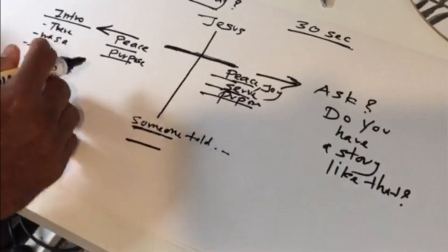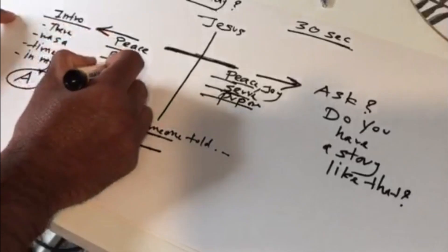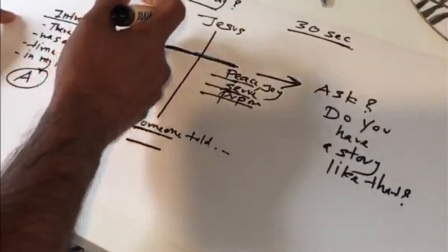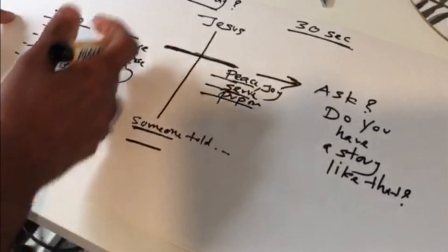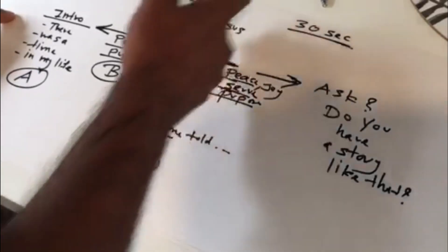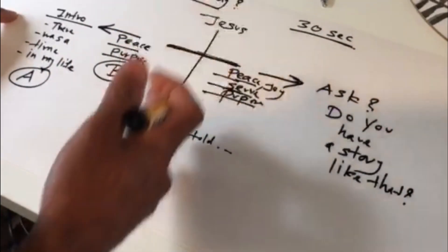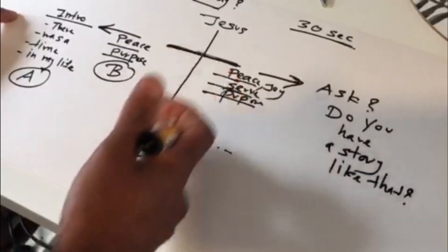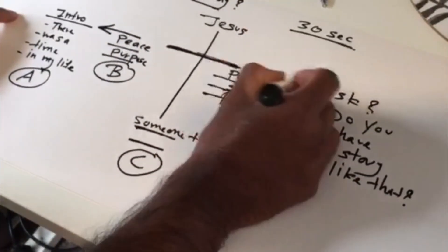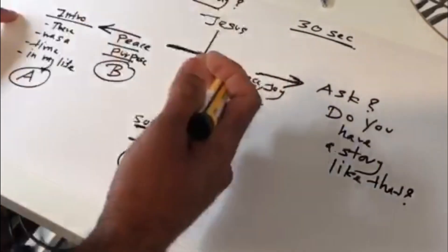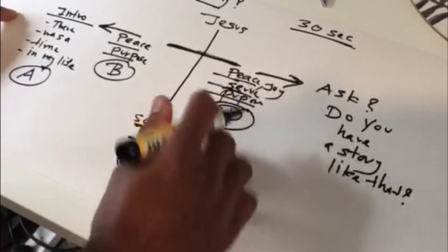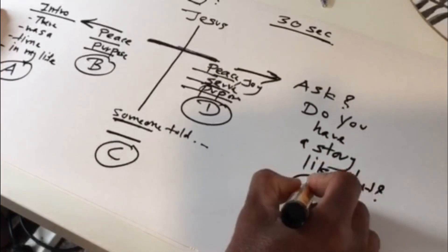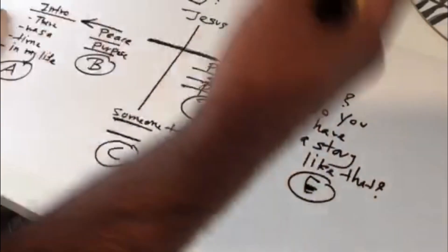So normally I put part A is intro. There was a time in my life and then describing the situation. We all know where we're at before we met with Jesus. Part B, then part C in the middle, when Jesus came, when somebody told, or when you heard the gospel, when you read the Bible. Part C, then part D with the arrow, what happened? For me it was, I found the joy of serving others and I had the peace and the purpose. Part D and ending with the part E, which is asking a question or giving an invitation to a person is, do you have a story like that?